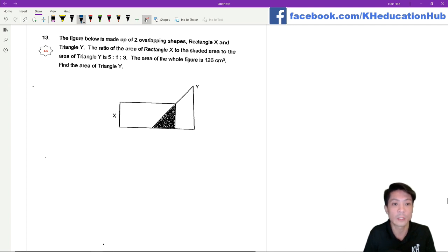So let's write down the information that's given to us. First, the ratio of the area of rectangle X to the shaded area to the triangle is 5:1:3.